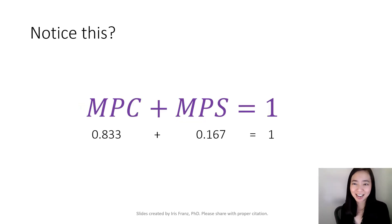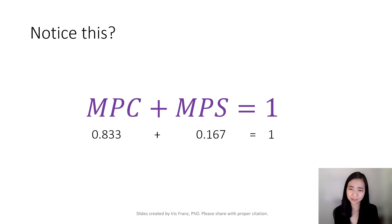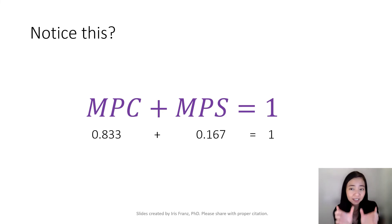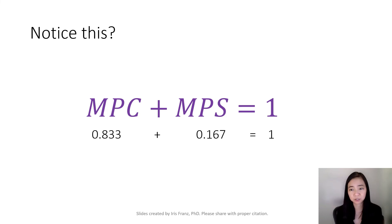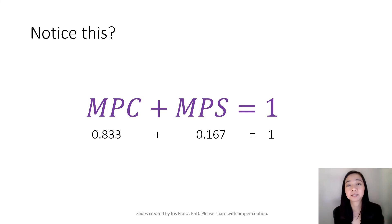Notice that MPC plus MPS equals 1. Why? Because if your income increases, that increase in income either goes to consumption or to saving. Therefore, the percentage going to consumption plus the percentage going to saving must equal 100%. So MPC plus MPS equals 1.